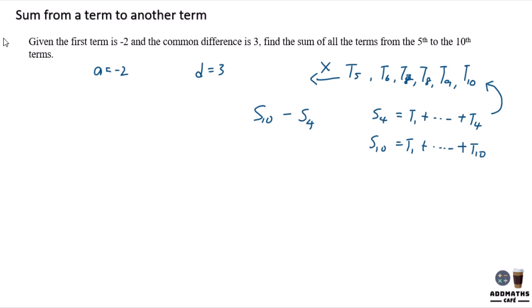So what you do now is to apply the formula. So S10 is equal to 10 over 2, 2a plus 10 minus 1, d. And by using calculator, you will have this answer. So at the end of the result, you will get 115.